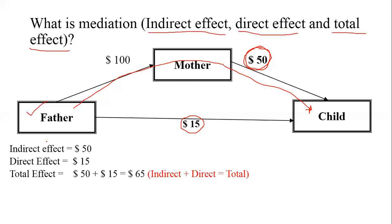The indirect effect is $50, because it goes indirectly to the child. How much total pocket money does the child have? $65, because $50 comes via the mother and $15 directly from the father. So the total effect equals the indirect effect plus the direct effect: 15 + 50 = 65. These concepts — indirect effect, direct effect, and total effect — are going to be very important when analyzing our mediation model in Andrew Hayes' PROCESS macro.